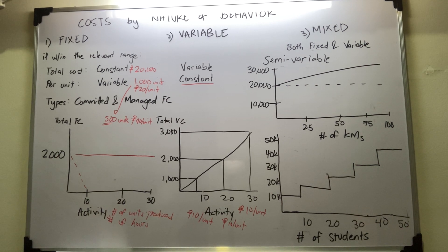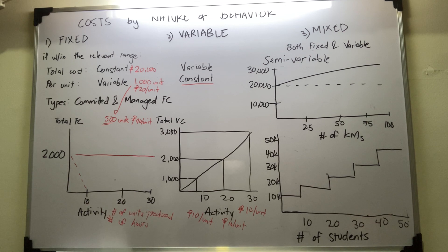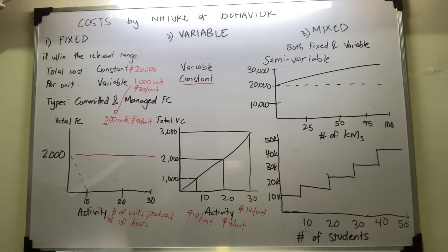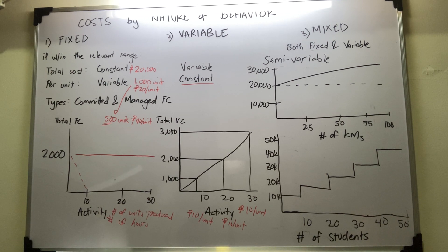Now let's proceed with the last nature of behavior of cost, which is the mixed. Mixed cost is defined as having both a fixed and variable component, such as heat, light, and water expense.